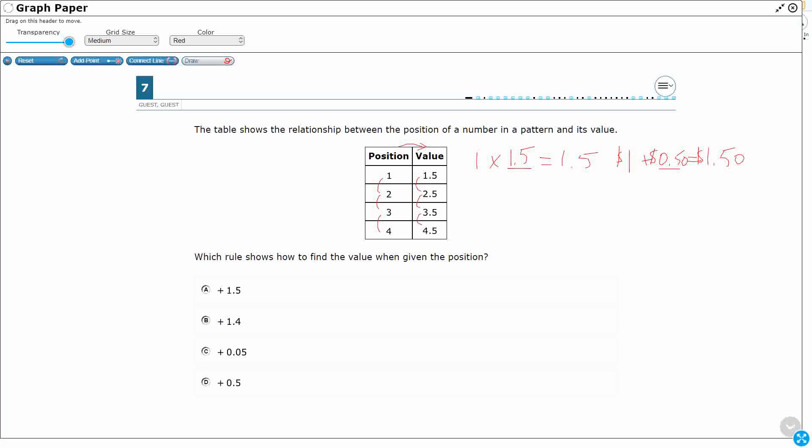Because remember, we're looking across the columns. Now, if your table happens to be like this, sometimes you might have a position of value like this, then you need to look up and down. You're always looking between the two different labels, whether they be side to side or up and down.